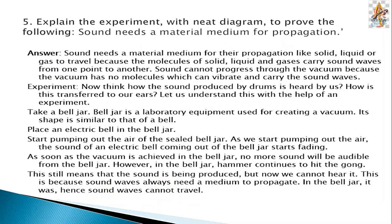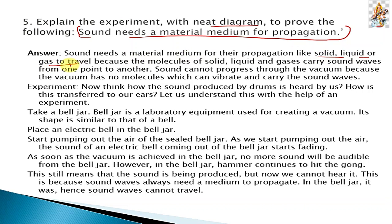Question number 5. Explain the experiment with a neat diagram to prove that sound needs a material medium for propagation. Sound needs a material medium for propagation — like solid, liquid, or gases such as air — to travel, because the molecules of solid, liquid, and gases carry sound waves from one point to another. Sound cannot progress through vacuum because vacuum has no molecules which can vibrate and carry the sound waves.